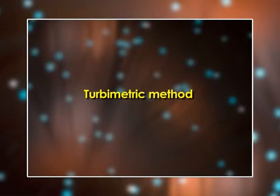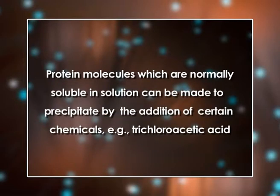Next, the turbidimetric method: protein molecules which are normally soluble in solution can be made to precipitate by addition of certain chemicals, for example trichloroacetic acid. Protein precipitation causes the solution to become turbid. Thus, the concentration of protein can be determined by measuring the degree of turbidity.